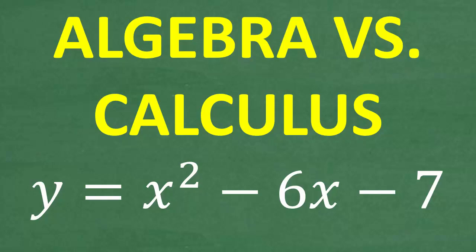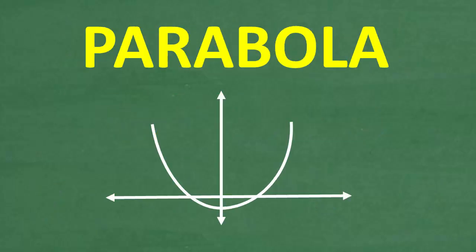Algebra versus calculus: which is easier to find the vertex of this shape right here? This happens to be a parabola. We're dealing with a quadratic equation or a quadratic function, and when we graph this thing, it will be a parabola, some sort of U-shaped thing like this.